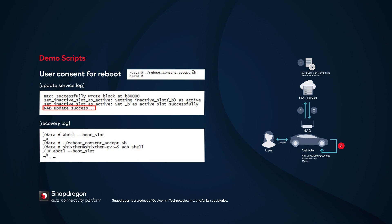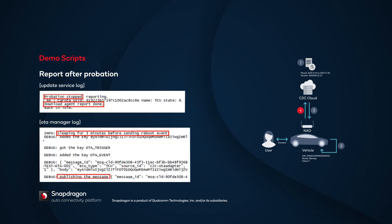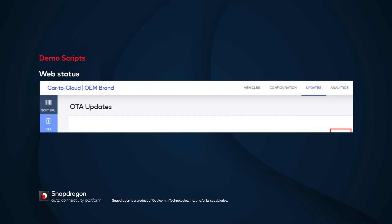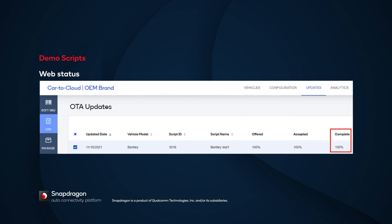In Step 4, the NAD device reports Success after Probation. In the UpdateService log, the Download Agent reports the status and the UpdateService goes back to idle state for the next update task. The OTA Manager publishes the message to the server. The DB on the cloud side shows the progress status: 3 indicates the state of downloading, 4 indicates successful download, 6 indicates the download was successfully installed, and 5 indicates reboot. In the Web portal, you can see the status of the update task for Model Bentley.